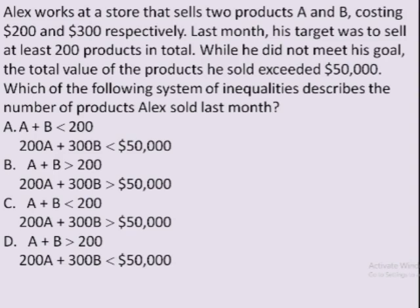If you notice the answer choices, the first inequality in each is the sum of A and B — either less than 200 or more than 200. A and B are the two products. The other inequality in the choices is 200A plus 300B, because all A's are sold for $200 and all B's for $300. So the revenue from A is 200A and from B is 300B, making total revenue 200A plus 300B. All four choices have 200A plus 300B and 50,000 — only the greater than or less than signs differ.